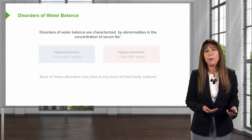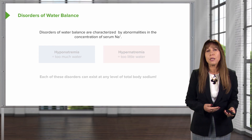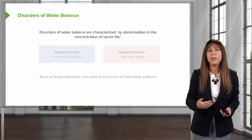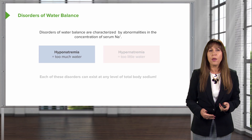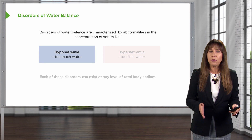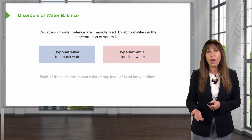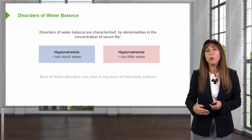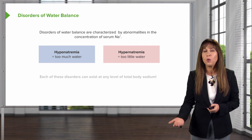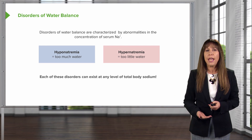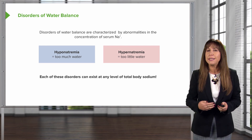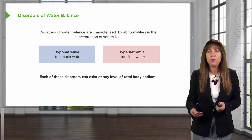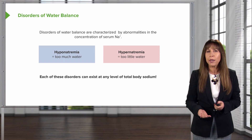Disorders of water balance are characterized by abnormalities in the concentration of serum sodium. Hyponatremia means that we have too much water. Hypernatremia reflects too little water. Each of these particular disorders can exist at any level of total body sodium.